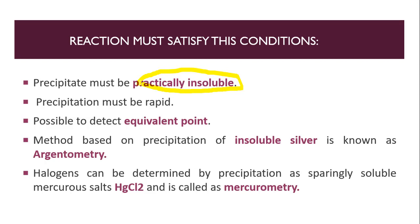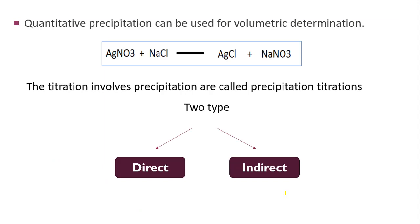Methods based on precipitation of insoluble silver are known as argentometry. If we are identifying the amount of a halogen, it can be determined by precipitation as a mercuric salt, for example HgCl2, and this is known as mercurometry. The name of the method depends on which analyte you are using or determining. Quantitative precipitation can be used for volumetric determination.